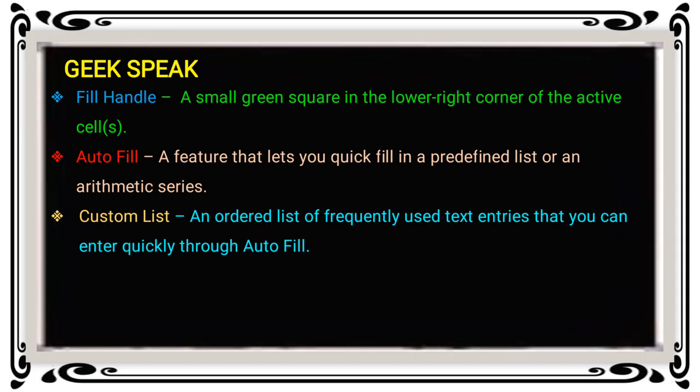Custom list is an ordered list of frequently used text entries that you can enter quickly through auto fill. You can use predefined data by using this auto fill feature. In another way, you can use a custom list.